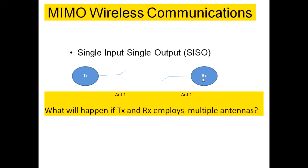Whatever signal is transmitted, the single version is transmitted by the single antenna and captured by the single receiver antenna, which gives it to the receiver for processing. If you want to improve the efficiency or the radio link performance of this single pair of antennas,